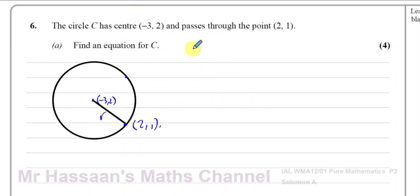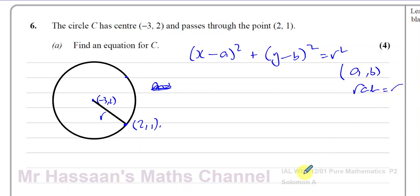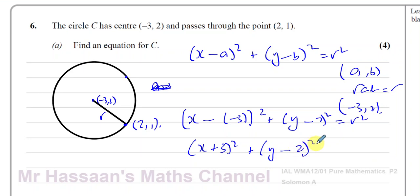To find the equation of a circle, you use the formula (x minus a) squared plus (y minus b) squared equals r squared. We know the center is negative 3, 2, so this gives us x minus minus 3, which is x plus 3, squared plus y minus 2 squared equals r squared.